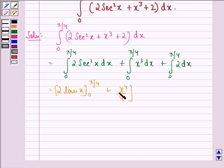Here also limit goes from 0 to pi by 4, plus here we have 2x, where limit goes from 0 to pi by 4.